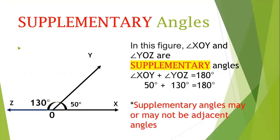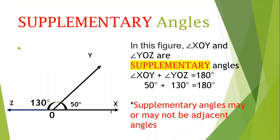Now let's come to some questions on supplementary angles. In this figure, here is angle XOY and angle YOZ. These both are supplementary angles. How can we say that? Angle XOY is 50 degrees and angle YOZ is 130 degrees. When we add 50 plus 130, we get 180 degrees. It means these are supplementary angles, and supplementary angles may or may not be adjacent angles.